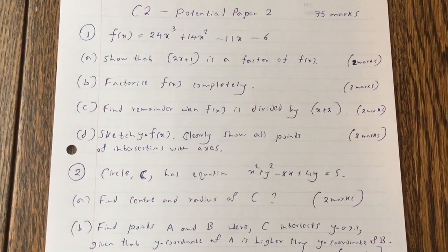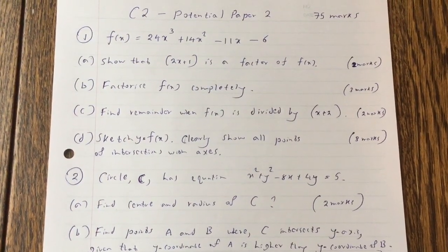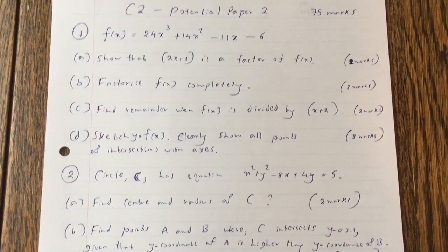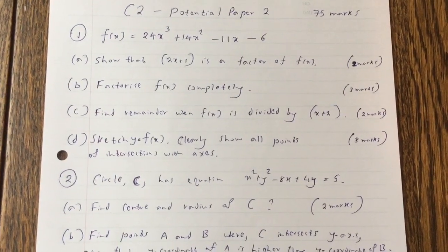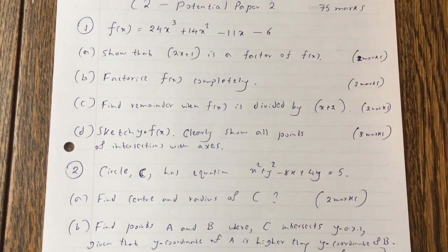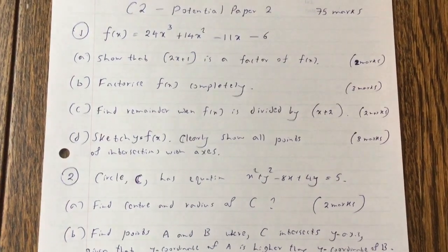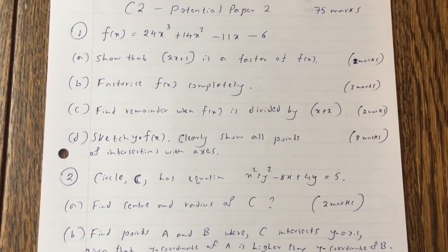Question 1. f(x) equals 24x cubed plus 14x squared minus 11x minus 6. Part A: Show that (2x+1) is a factor of f(x). Part B: Factorize f(x) completely.